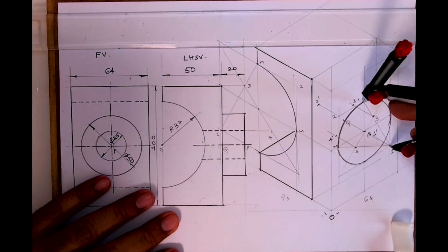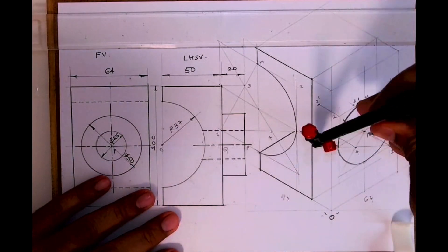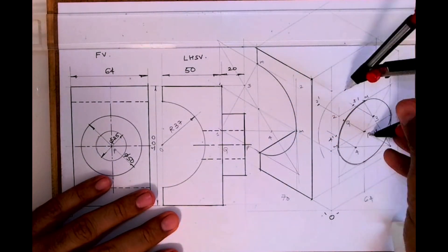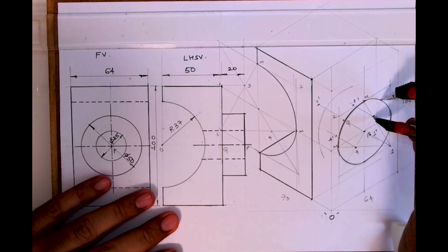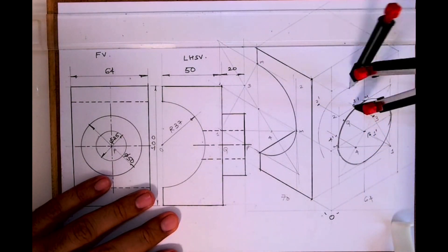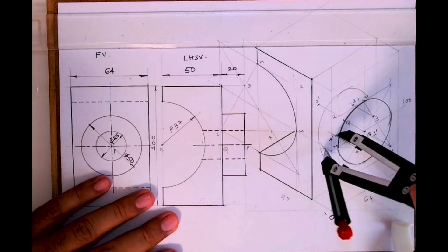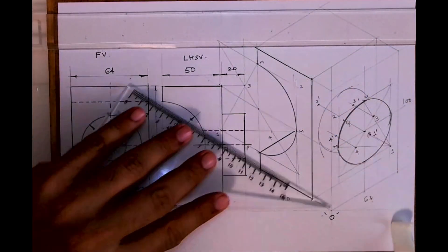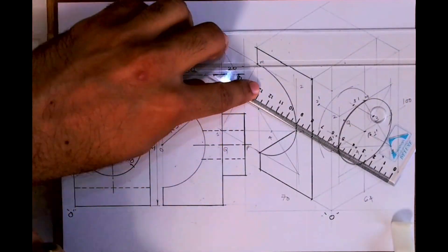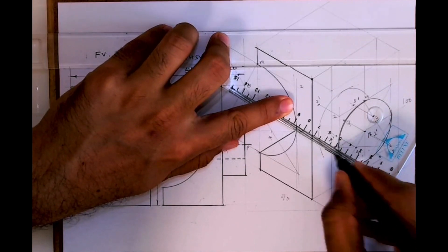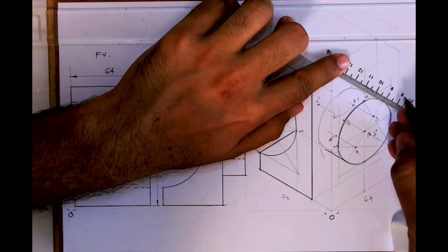So now what I'll do is take here one to M, and from one dash I will draw arc. Three to M, we'll take that radius, from three dash we'll draw arc. Same way four dash and we'll draw arc. Now we need to draw tangent. See, this is how you will draw, so you draw tangent like this.